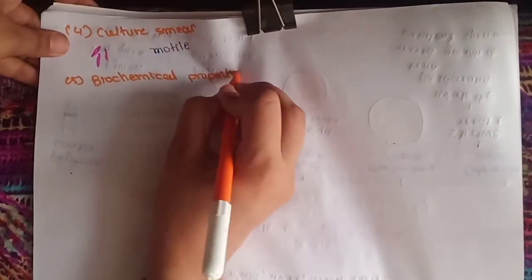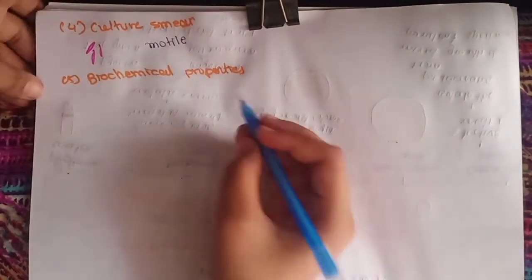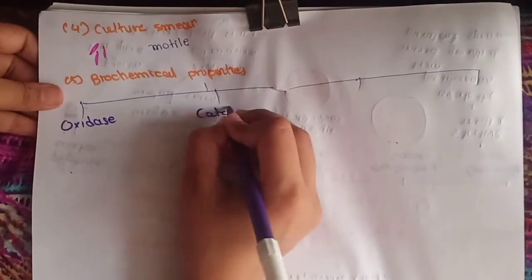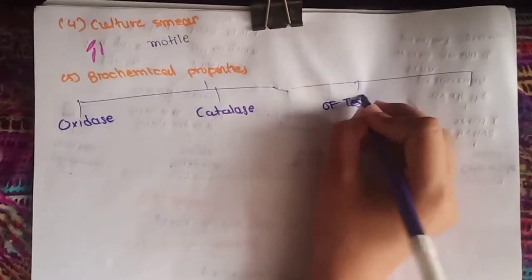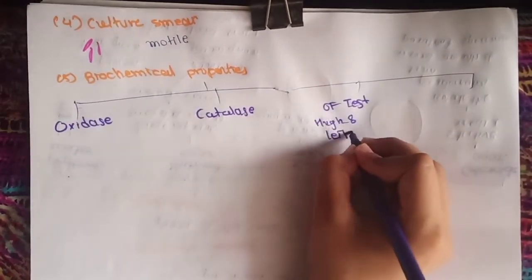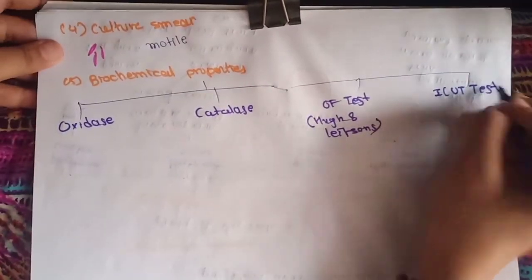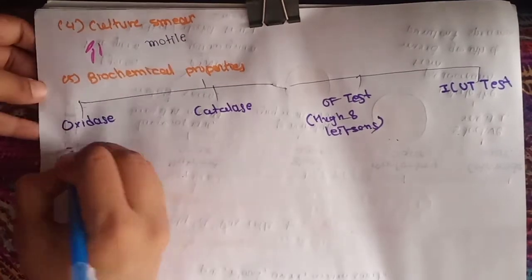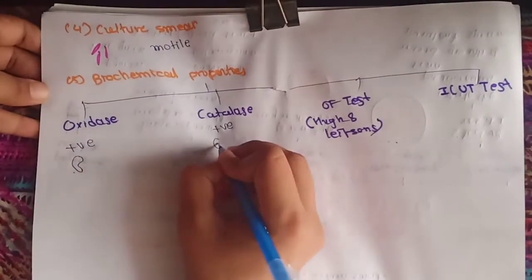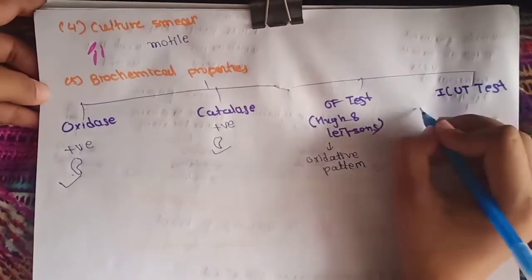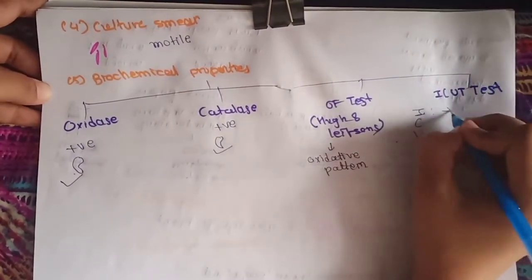The fifth method is biochemical tests for identification. Pseudomonas gives these tests: first is oxidase test, second is catalase test, third is oxidative-fermentative test of Hugh and Leifson, and the ICUT test. We know that Pseudomonas is oxidase positive and catalase positive. In Hugh and Leifson's oxidative-fermentative test, it will show oxidative pattern.